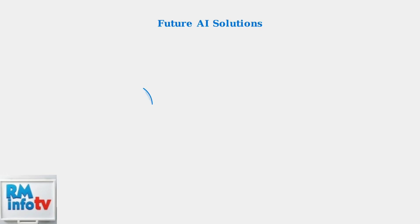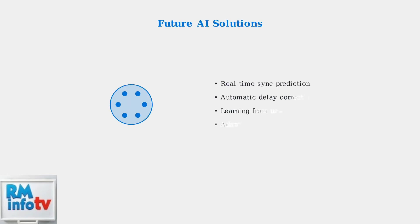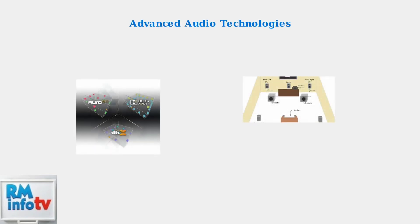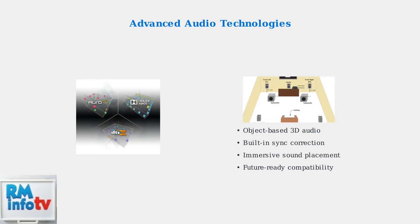Looking ahead, artificial intelligence and machine learning are expected to play a larger role in predicting and adjusting audio-video sync in real-time, providing automatic corrections. Advanced audio technologies like Dolby Atmos and DTS-X include built-in features to improve audio-video synchronization. These object-based audio systems promise more seamless experiences in home theater setups.